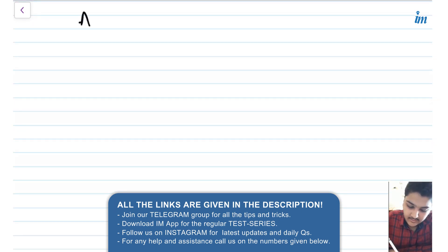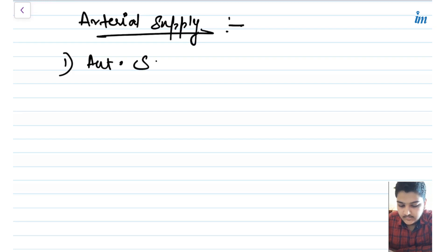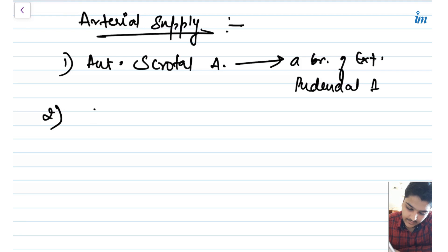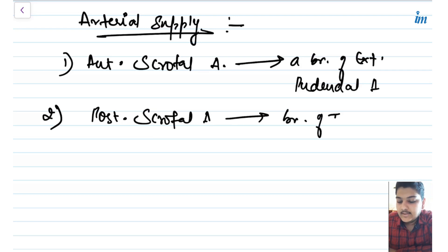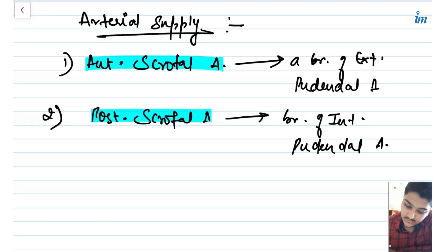Now let's talk about the arterial supply of the scrotum, which is very easy because the names are similar to the scrotum itself. First we have the anterior scrotal artery, which is a branch of the external pudendal artery. Then we have the posterior scrotal artery, which is a branch of the internal pudendal artery.